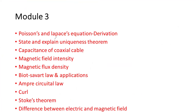The important topics you need to cover for module 3 are: Poisson's and Laplace equations with derivation, the uniqueness theorem — which may be asked directly — and the capacitance of a coaxial cable, including the calculation of that capacitance.